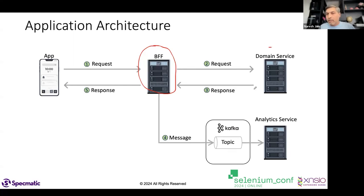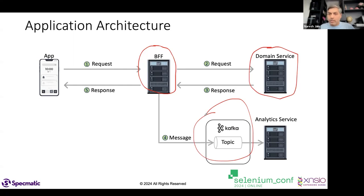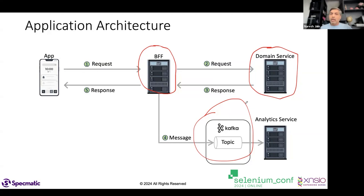I want to make sure the BFF layer is very resilient. Subsequently we'll also look at the domain service and Kafka from a resiliency perspective. These are all pieces that could have some kind of fault, making the overall user experience unpleasant. Our job as quality engineers is to ensure the experience on the app is seamless.